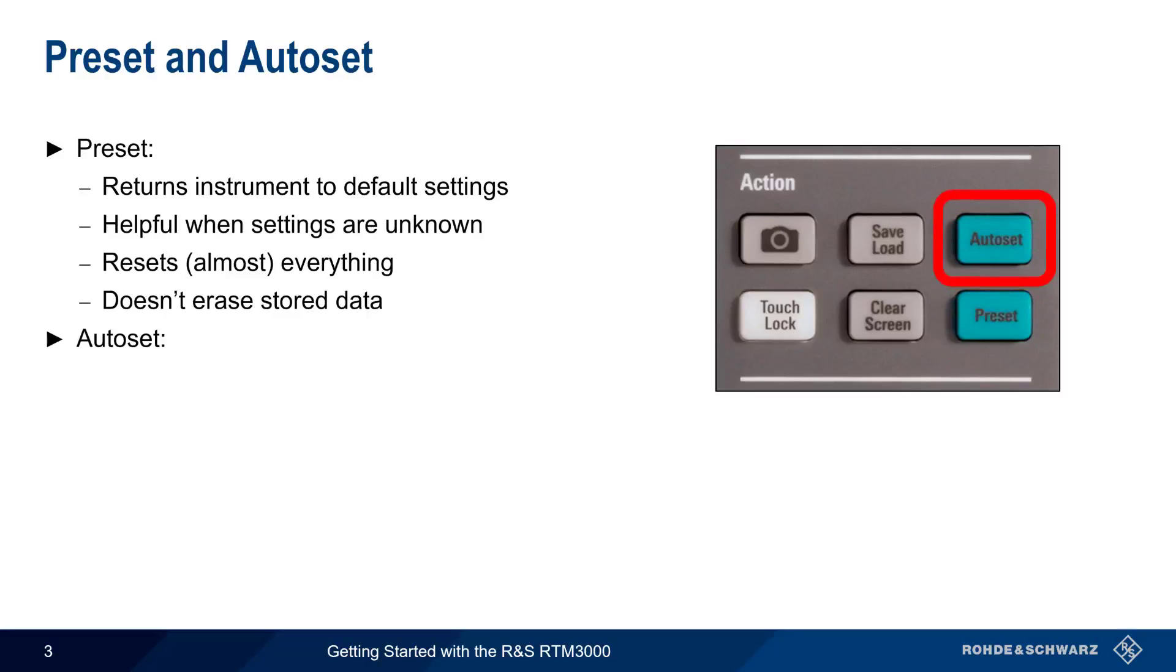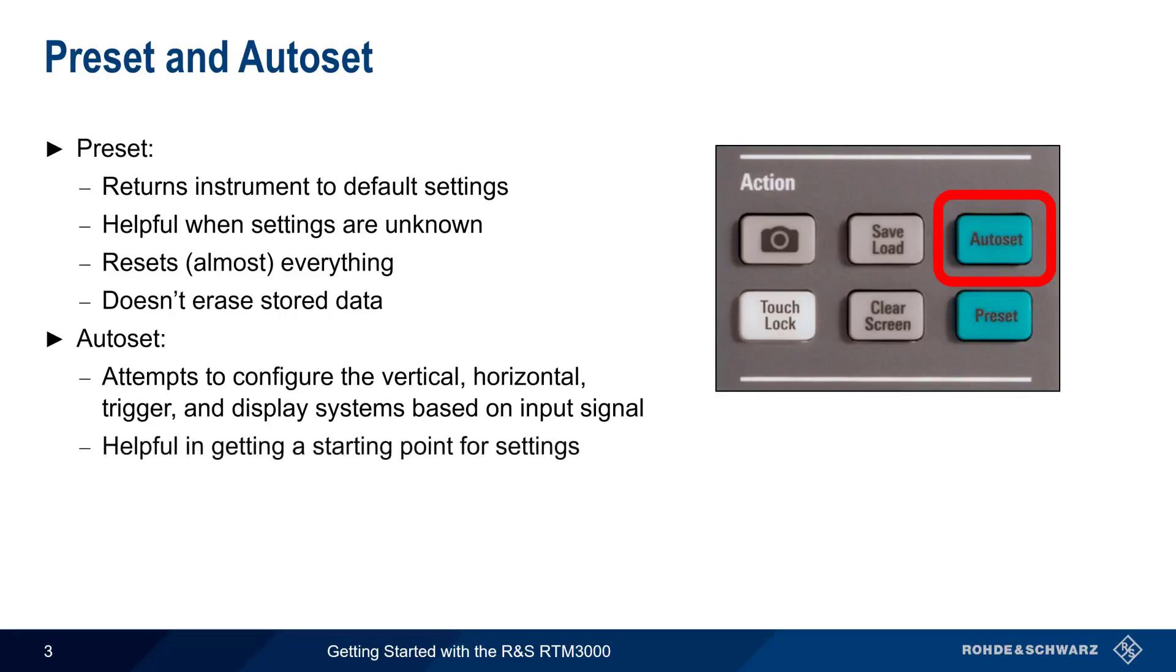Autoset, on the other hand, causes the scope to attempt to configure the vertical, horizontal, trigger, and display systems automatically based on the current input signal. Although settings chosen by Autoset may not always be exactly what you need, they are very helpful in getting a waveform on the screen and is a starting point for additional adjustment. Unlike Preset, Autoset leaves most other settings unchanged. One last note: be careful not to press Preset when you really want Autoset.